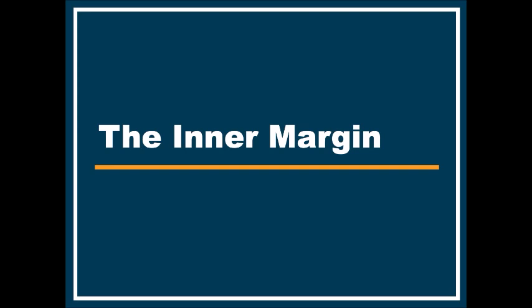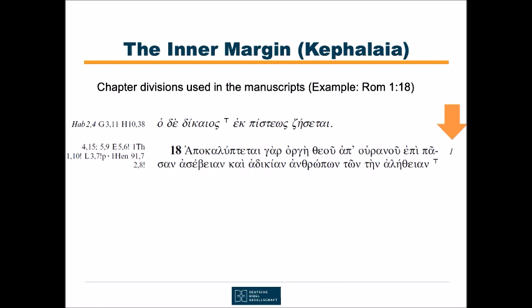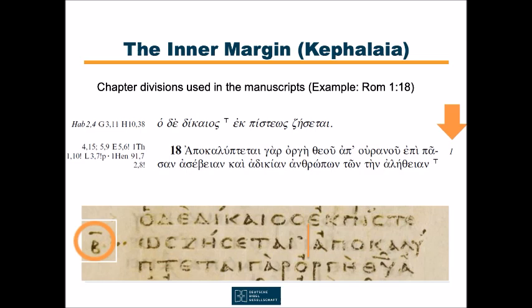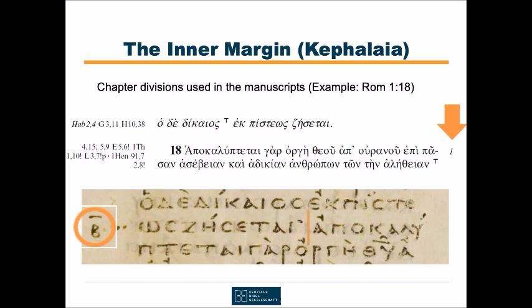Before we get back to the textual apparatus, let us have a look at the inner margin. Two types of information are given here. First, throughout the New Testament you will find italic numbers. There is a 1 at the beginning of the new paragraph at verse 18 — the number indicates that many manuscripts have somehow marked this place as a first chapter division in Romans. The chapter divisions which we use today were developed only in the Middle Ages, but already early manuscripts had a system of dividing the text into sections. Here you see an image of the Codex Vaticanus with a transition from verse 17 to 18, where the letter B at the margin indicates the division. The scholarly term for these divisions is Kephalaia.